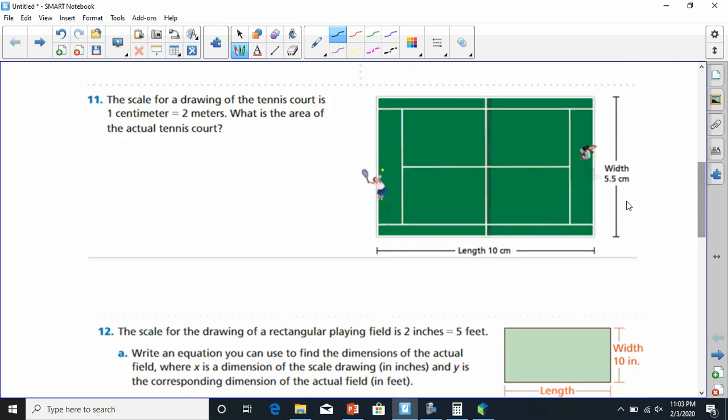Going on number 11, it says the scale for the drawing of the tennis court is 1 centimeter equals 2 meters. And it says, what is the area of this tennis court? First of all, we got 10 centimeters down here. So the length is going to be 10 centimeters. And we're trying to find how much that actually is. Well, that's 1 times x, and that's x. And 2 times 10, that's going to be 20. So the bottom here is 20.